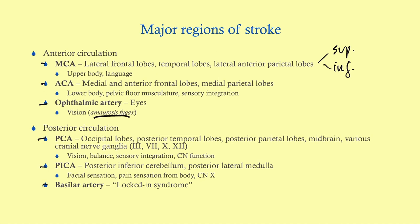PCA supplies the posterior part of the brain where we have our visual cortex, so you'll primarily have visual symptoms. However, the PCA also supplies parts of the basal ganglia, so you can have balance issues and cranial nerve dysfunction. PICA supplies the posterior inferior cerebellum and parts of the medulla — you can affect cranial nerves here, particularly cranial nerve 10. The basilar artery causes locked-in syndrome: a quadriplegia where you lose everything motor except the extraocular muscles. Associate basilar artery with locked-in syndrome — that is a common Step 1 question.